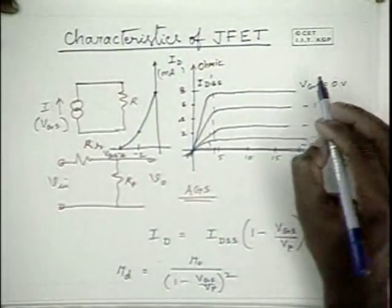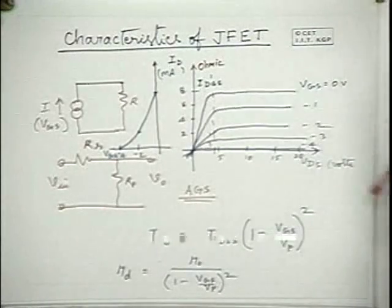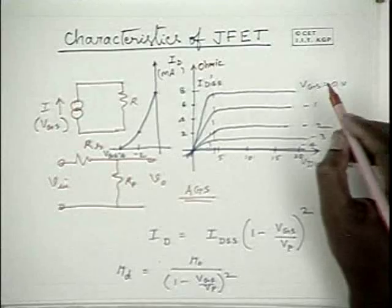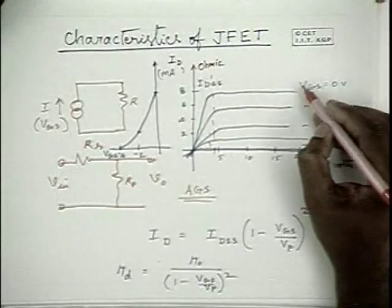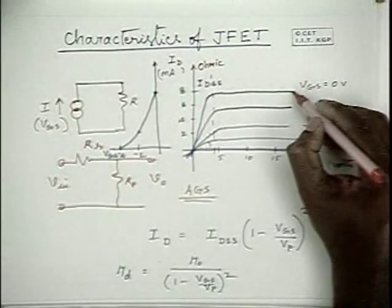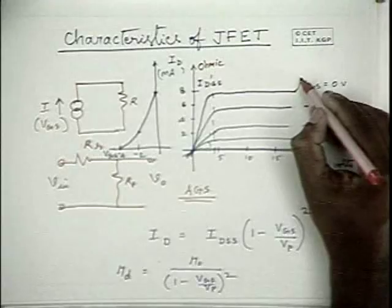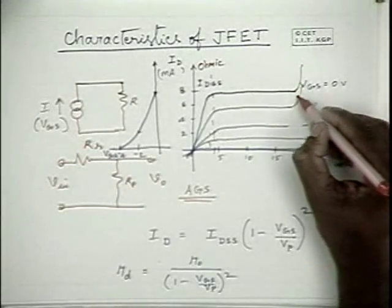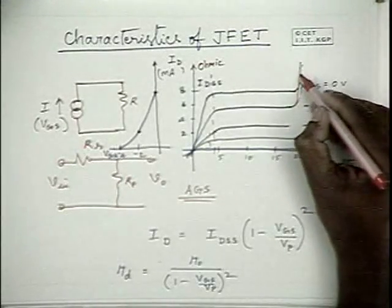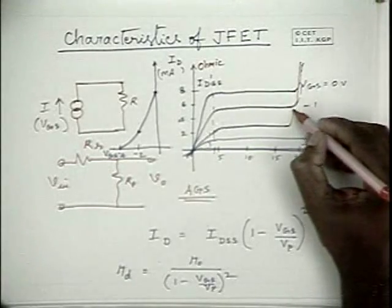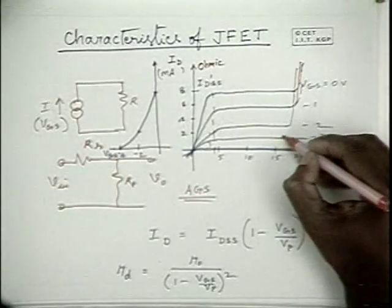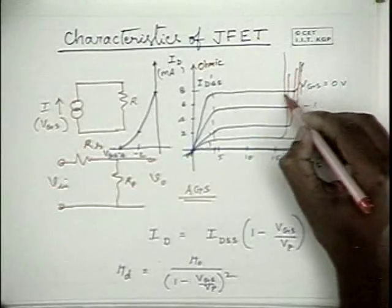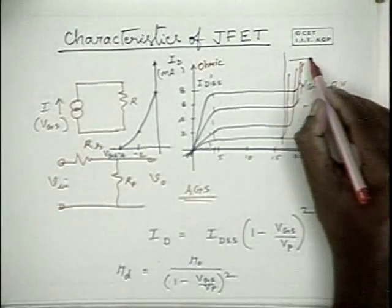If you increase the voltage further, there would be breakdown occurring in the semiconductor and the current increases. This region is known as the breakdown region.